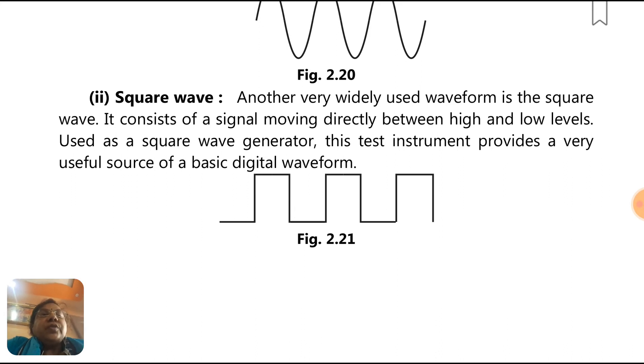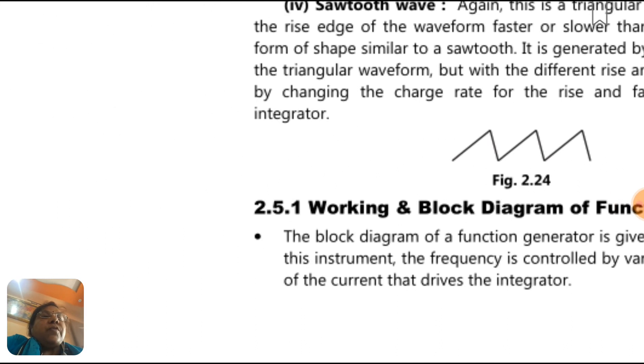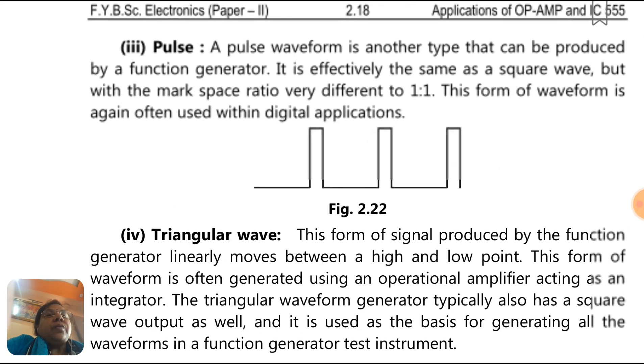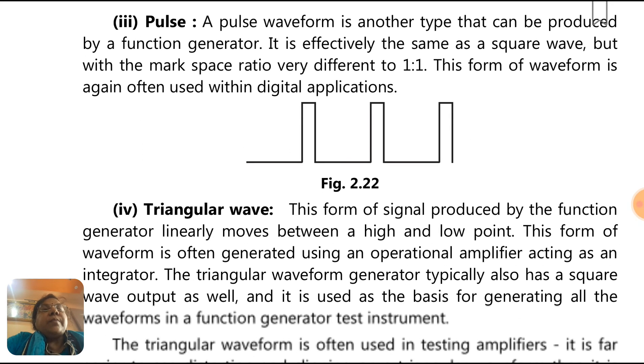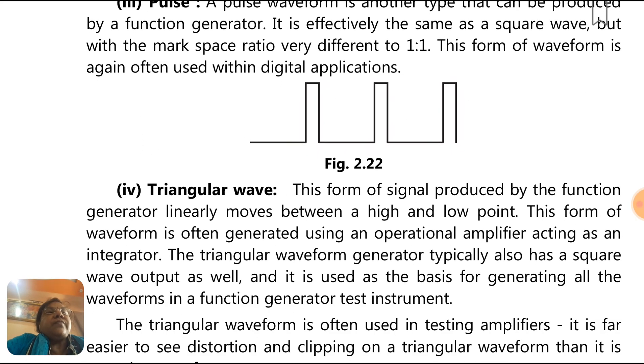Triangular pulse wave: a pulse waveform is another type that can be produced by a function generator. It is effectively the same as square wave but with the mark-space ratio very different to one-to-one. This form of waveform is again often used within digital applications.